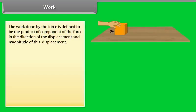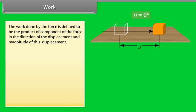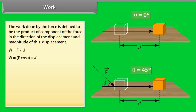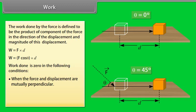Work. The work done by the force is defined to be the product of component of the force in the direction of the displacement and magnitude of this displacement. W equals F into D. W equals F cos theta into D. Work done is zero in the following conditions: when the force and displacement are mutually perpendicular, when the force is zero, when the displacement is zero.